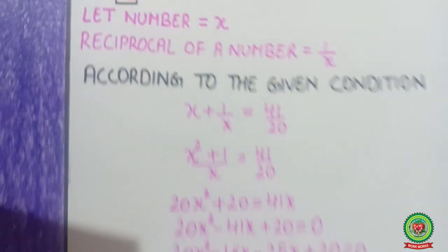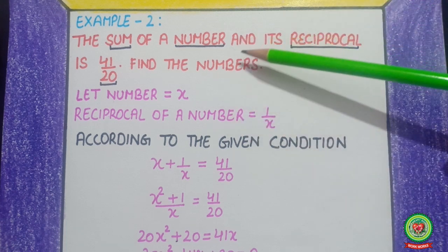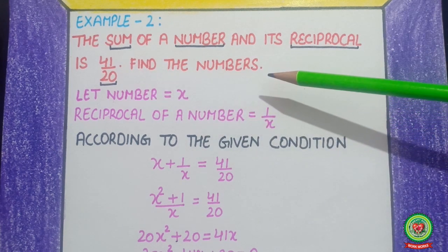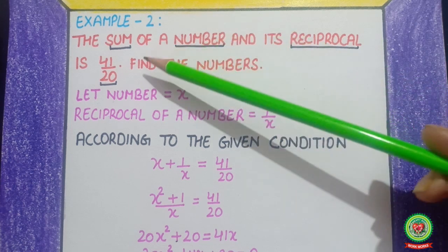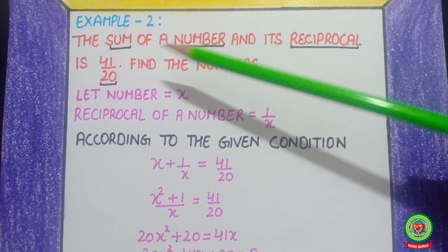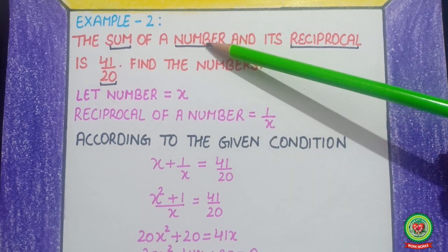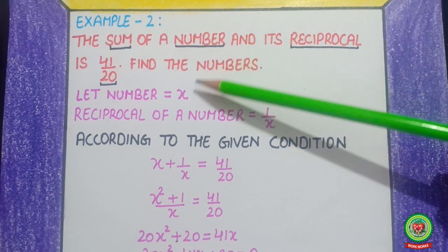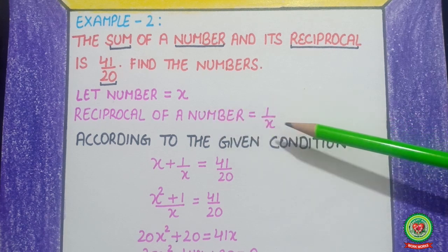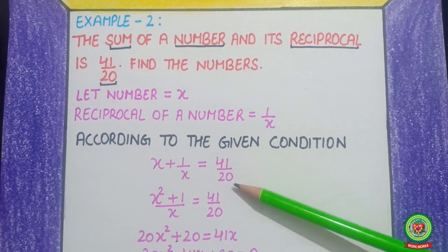Now, example number 2: the sum of a number and its reciprocal is 41 upon 20. Then find the numbers. The keywords are: sum, a number, reciprocal is 41/20, and we have to find the numbers. Let the number equal x and the reciprocal of the number be 1 upon x. According to the given condition, the sum of both numbers is equal to 41 upon 20.